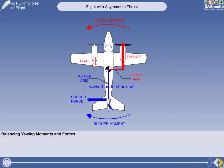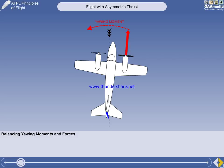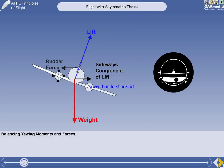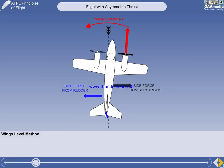Although the moments are balanced in the diagram on screen, the forces are not. The unbalanced side force from the rudder can be balanced in two ways: either with the wings level, or by banking towards the live engine — which in a marginal situation is the preferred method. In the wings-level method, rudder is used to prevent yaw, and the ailerons are used to keep the wings level.